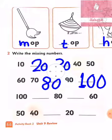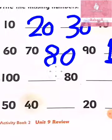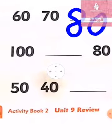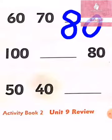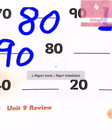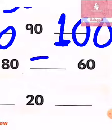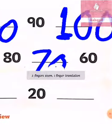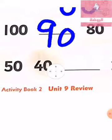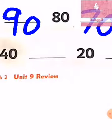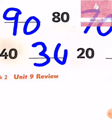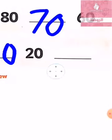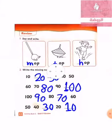Now we will do the other part of the question. We will write from the biggest number to the smallest number. The biggest number is 100. Before 100 what do we have? Number 90. Excellent! Then number 80, and the missing number here is number 70. Then number 60, 50, 40, and the missing number here is number 30. Very good! Then number 20, and the smallest number is number 10. Excellent!